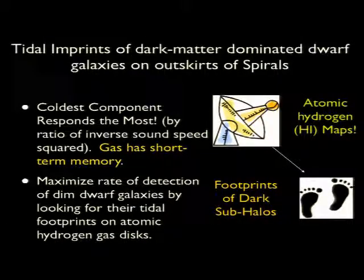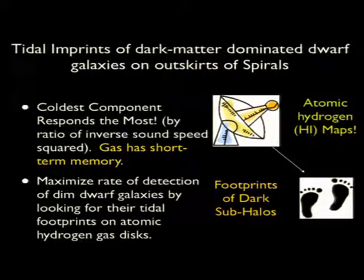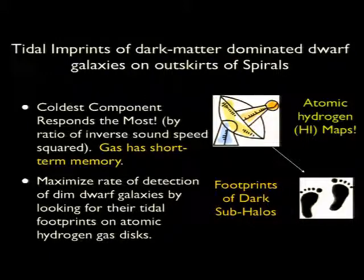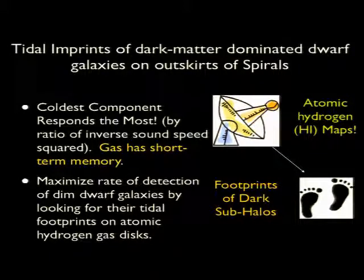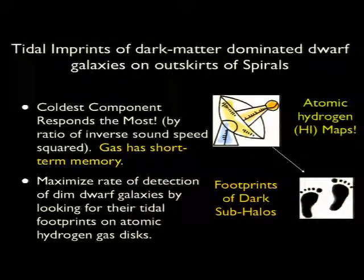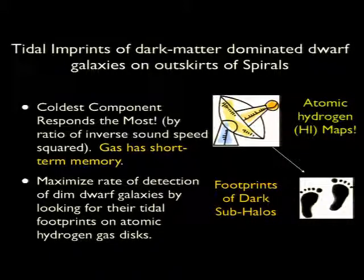One reason we focus on the H1 is because it's the coldest component of the galaxy and the most responsive — gas is of course a lot colder than the stars. The second reason is that gas has short-term memory: disturbances in the gas disk dissipate on the order of a dynamical time, leaving a clear slate, in contrast to the stellar disk where disturbances last for many crossing times, making interpretation more difficult. Finally, the outer H1 disks of spirals are very extended, going out to distances far beyond the optical radius, presenting a large cross-section for interaction with dark subhalos or dark matter-dominated dwarf galaxies.